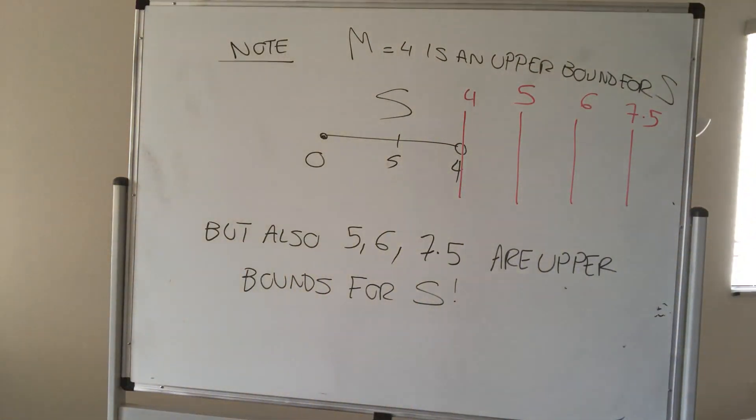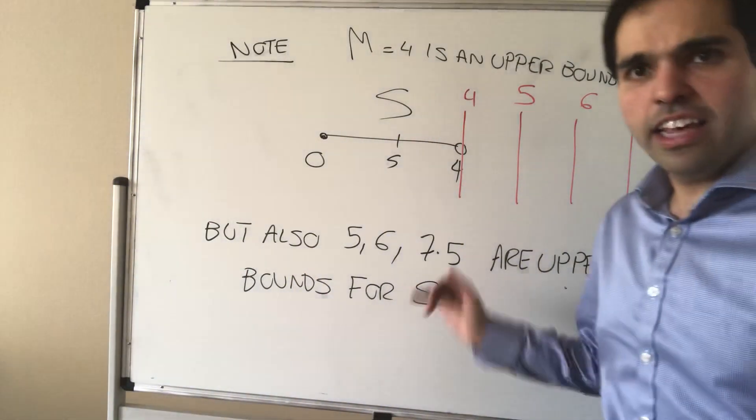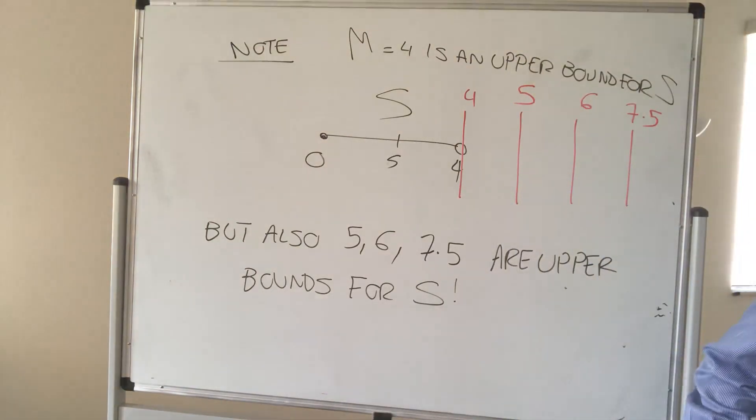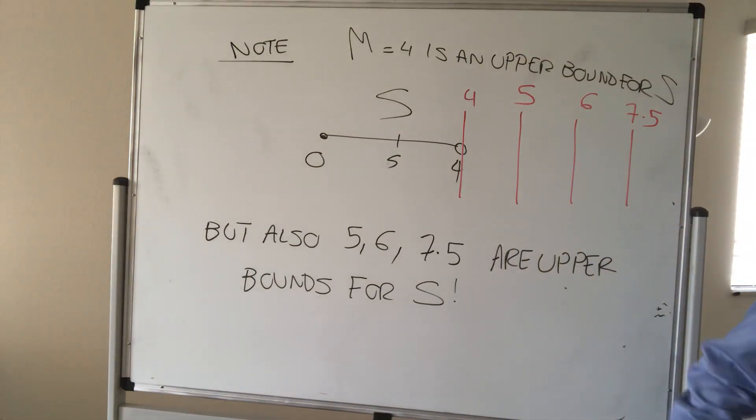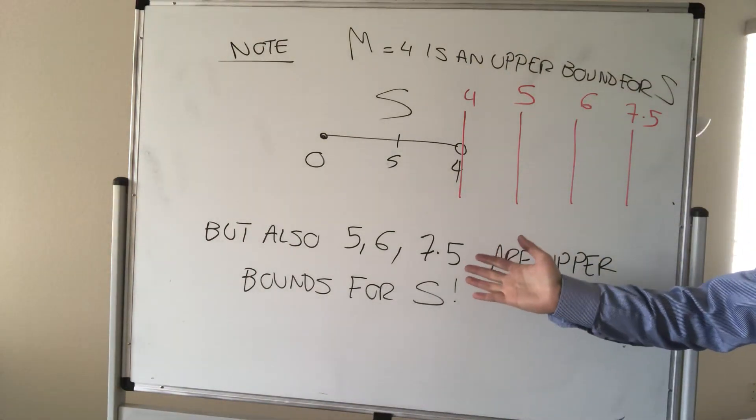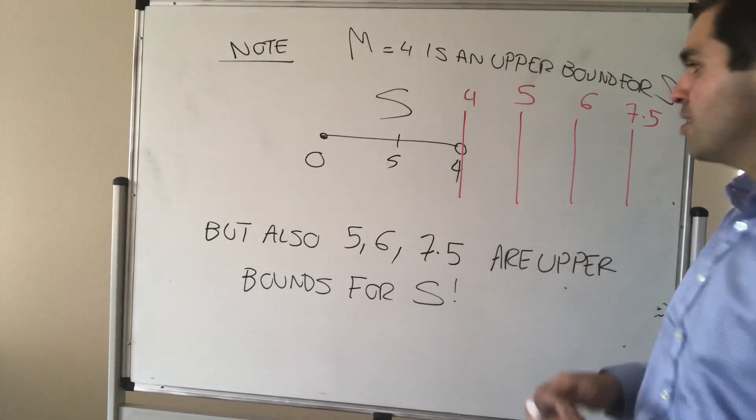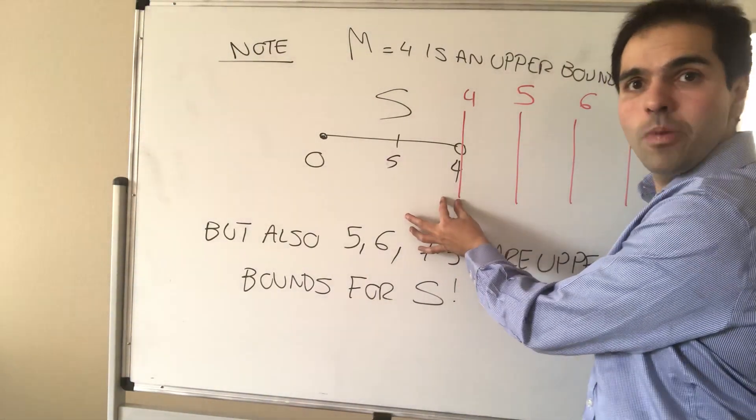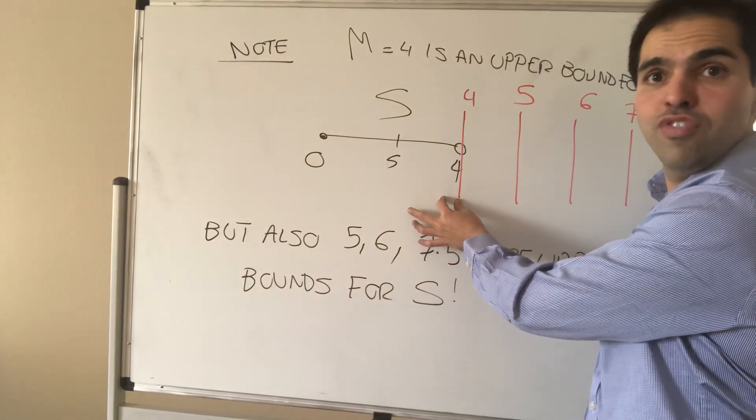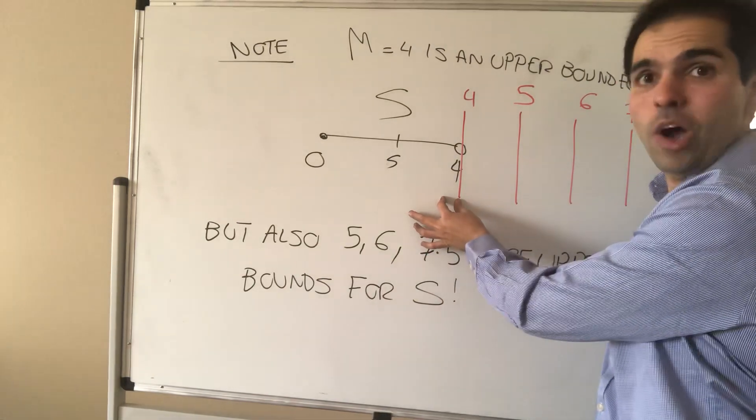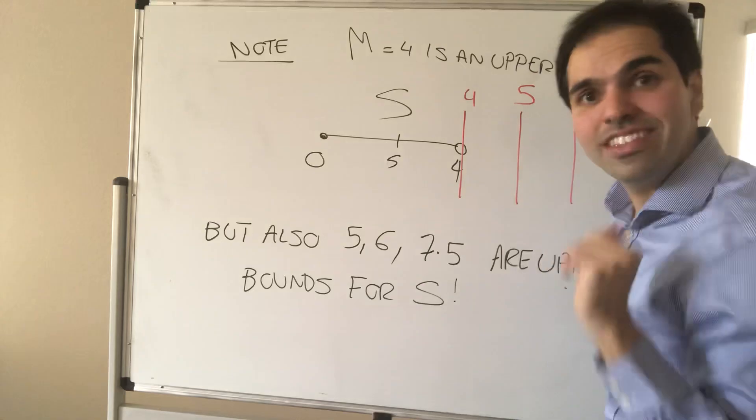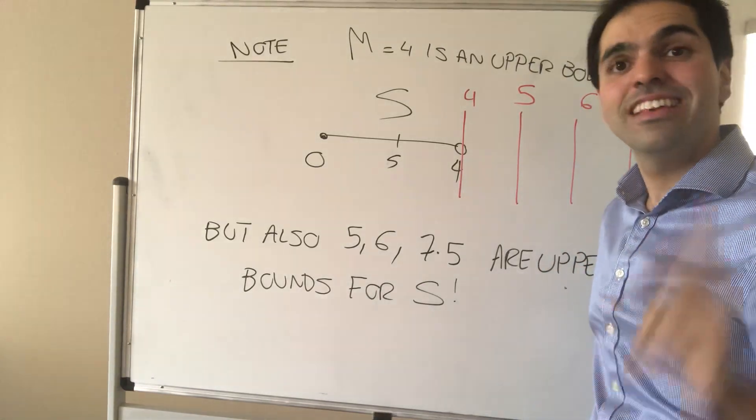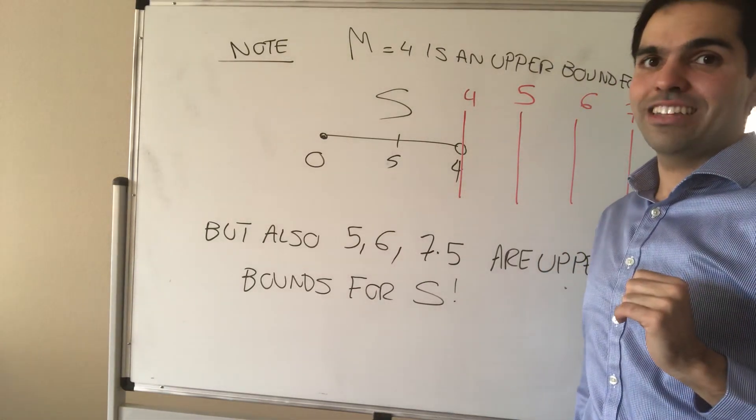But of course, this raises the question that what makes four so special? Well, what makes four so special is that among all the upper bounds, four is the smallest upper bound. In other words, four is what's called the least upper bound, and that's precisely what the supremum is. And that will be the point of next video.